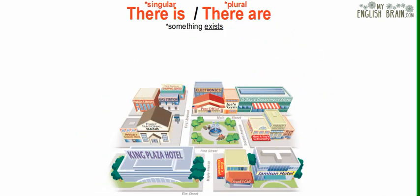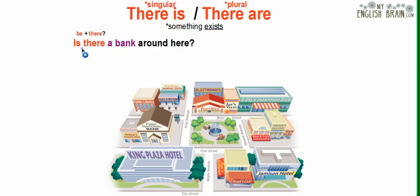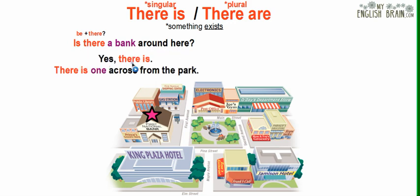Now it's time for today's grammar: 'there is' and 'there are.' Remember, 'there is' is for singular objects and 'there are' is for plural objects. We use them to indicate that something exists. In a question, we say: Is there a bank around here? Notice the verb 'be' comes first, then 'there.' If there is a bank in the city, the answer is: Yes, there is — there is one across from the park.